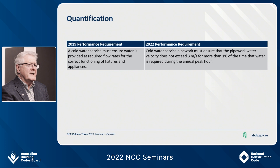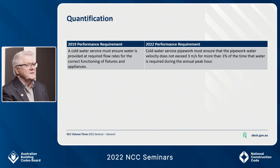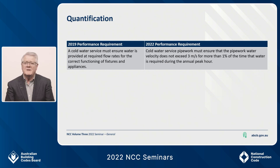The first performance requirement relates to the flow rates of a cold water service. As you can see, the 2019 requirement didn't really give you much to work towards, and determining the appropriate flow rates for the correct functioning of fixtures is tricky. The 2022 requirement is a lot more specific, outlining a limit of three metres per second. The reference to one percent refers to how much time the system would be expected to exceed this maximum velocity during the period of peak use, which is referred to as the annual peak hour.